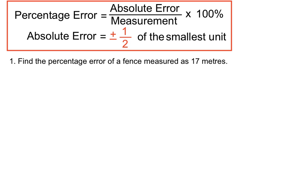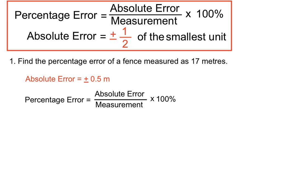Let's have a look at an example. Find the percentage error of a fence which is measured as 17 metres. The absolute error will be plus or minus half a metre. We're measuring in metres here — 17 metres. We have a look at what place value the units number has. So percentage error equals absolute error over the actual measurement. Our absolute error was plus or minus half of the units we're measuring in — in this case, metres. So plus or minus 0.5 is our absolute error, placed on top over the actual measurement.